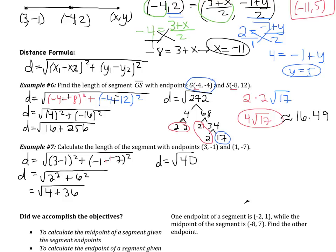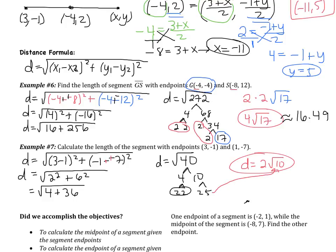Simplifying √40: 40 breaks down to 4 times 10; 4 is 2 times 2; 10 is 2 times 5. Circle the pair of 2's — one comes out. The 2 and 5 are left over under the root. So your distance should be 2√10. If you made a mistake, hopefully you can see what went wrong.